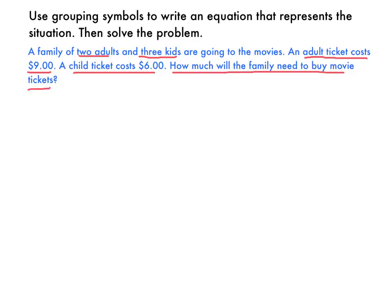When I think about this, I know that an adult ticket is $9 and that there are two adults that are going. And it says that a child ticket is $6 and there are three kids that are going. So that's the information I have so far. I also know that I need to find out the cost for adults plus the cost for kids, and that's going to equal my total.